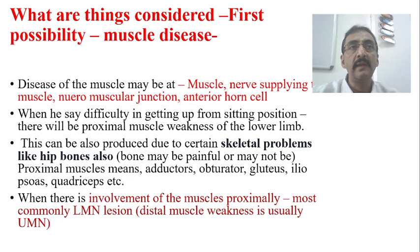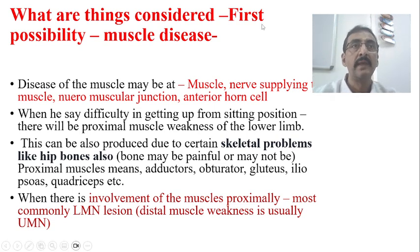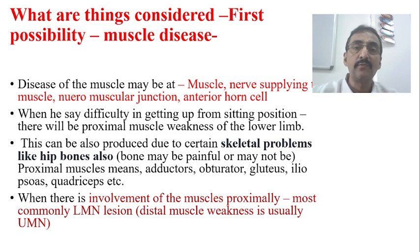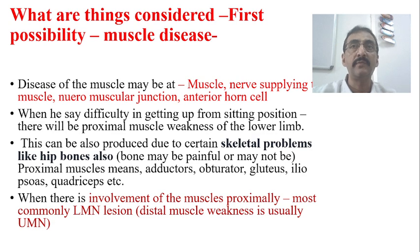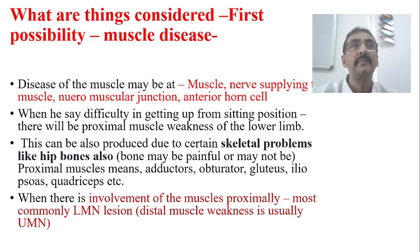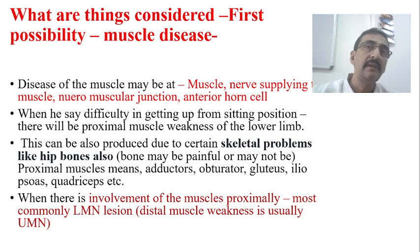Once the macro anatomical diagnosis — that this is a disease of the muscle — is established, we think about the micro anatomical diagnosis. Within the muscle, which particular part is affected? Is it the muscle fiber itself, is it the nerve supplying to the muscle, especially the neuromuscular junction, or is it at the level of the anterior horn cell supplying motor fibers to the muscle? Or is it the sensory part? This is what the micro anatomical diagnosis covers.